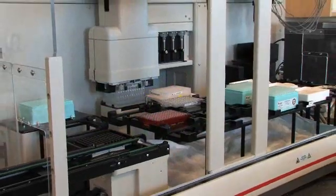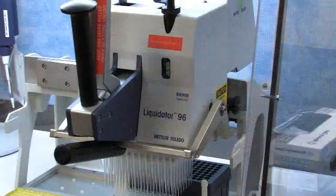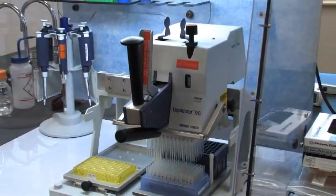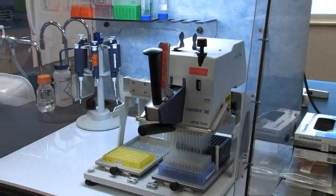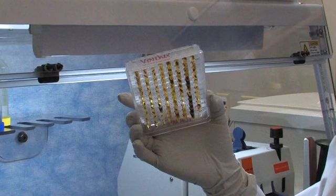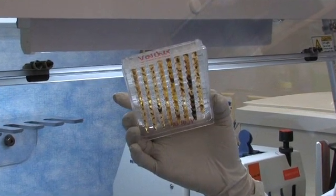First, we'll demonstrate DNA extraction from an animal sample on a robotic platform. For robotic DNA extraction, the liquidator 96 is used to set up the sample plate prior to moving to the robotic platform. The samples are incubated overnight in the presence of lysis buffer and proteinase K at 56 degrees Celsius.